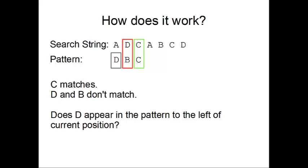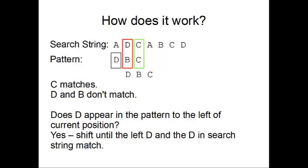In order to take this possibility into account, we only shift the pattern until the D we found in the pattern is aligned with the previously non-matching D in the string. Then we start matching the right end of the pattern again.